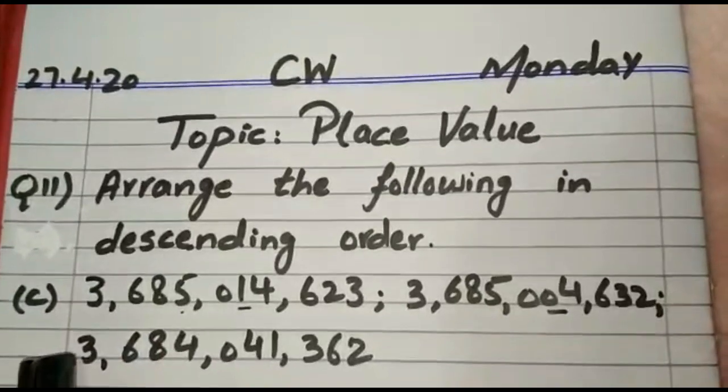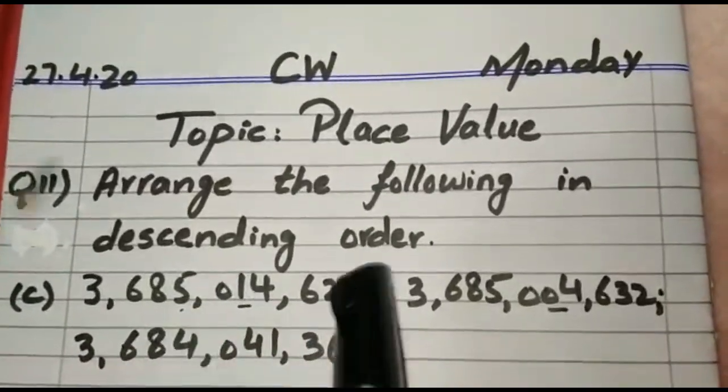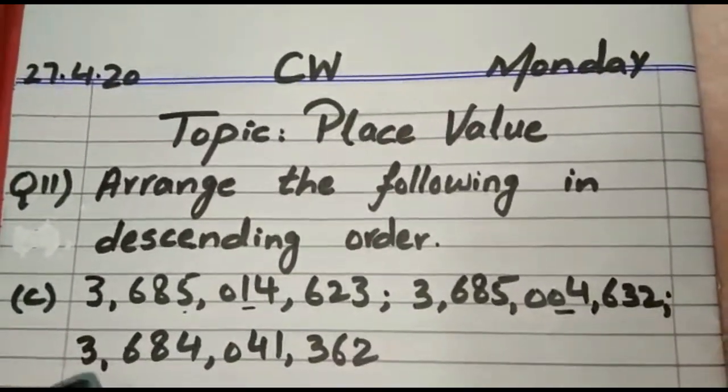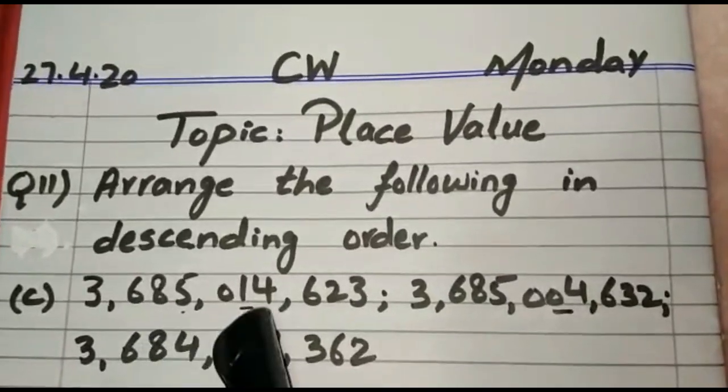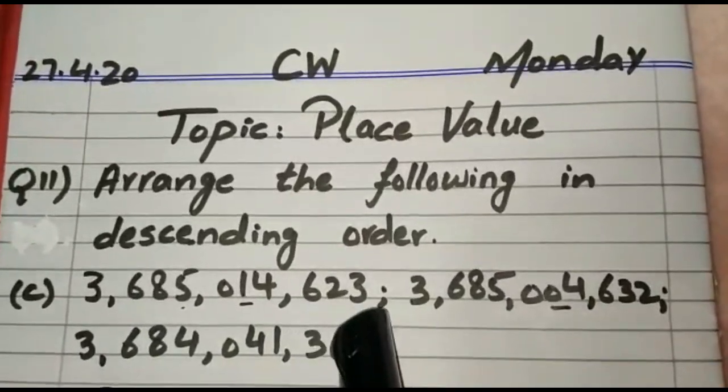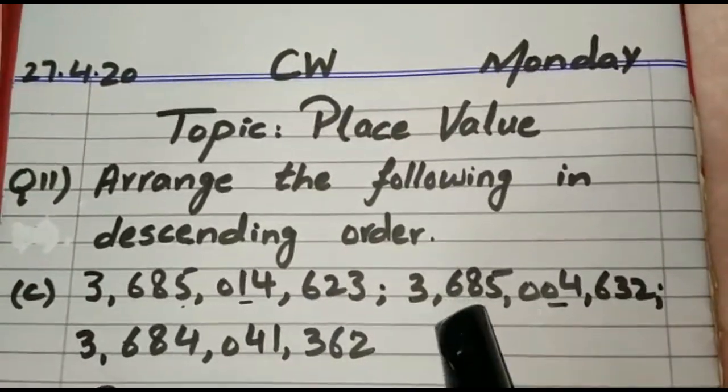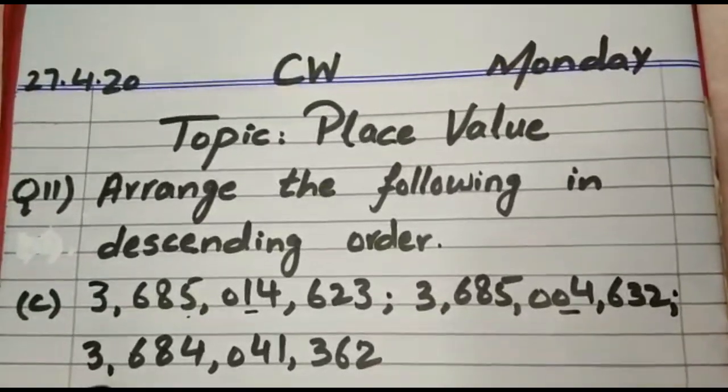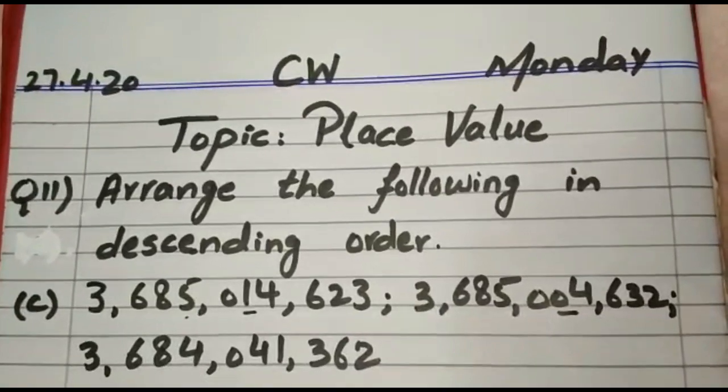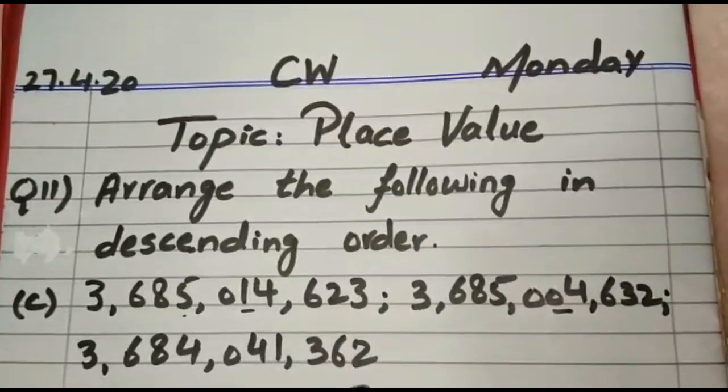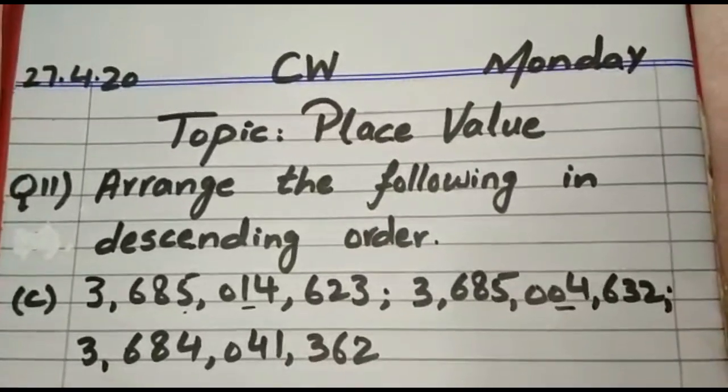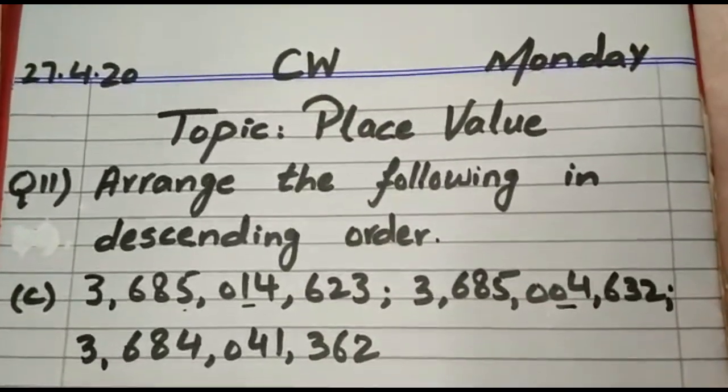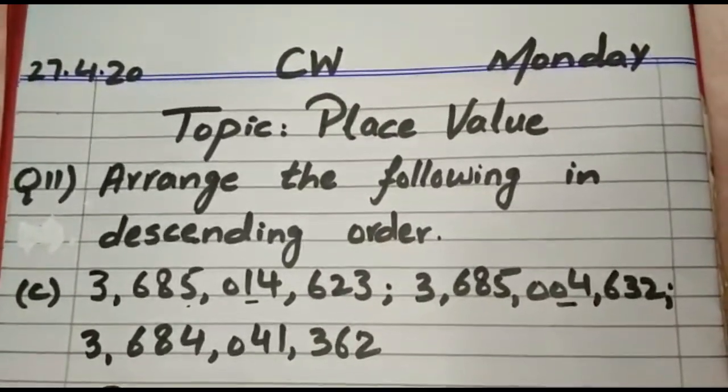Question number 11 part C. We have to arrange these numbers in the descending order from bigger to smallest one. First number is 3,685,014,623. Second is 3,685,004,632. Third is 3,684,041,362. Now we will compare the numbers. Rule number 1 is that we will count the number of digits in the given number.